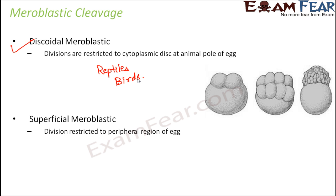The other type is superficial meroblastic cleavage, where the division is restricted only to the peripheral region of the egg — just the surface of the egg. Superficial means something which is on the top or surface — like a superficial relationship is one seen only from the outside with nothing deep inside. So here, cleavage is restricted to the outer portion only, and superficial meroblastic cleavage is seen in the eggs of insects.